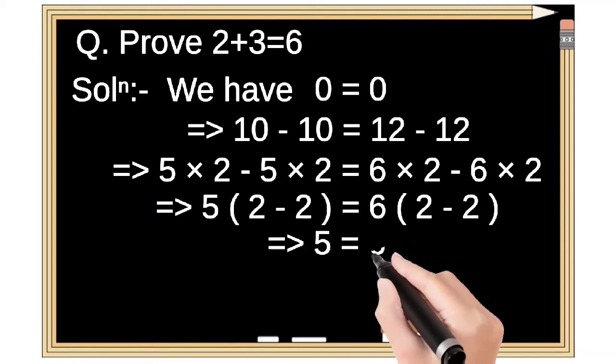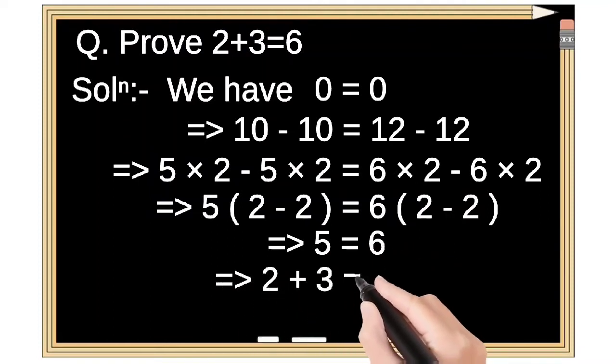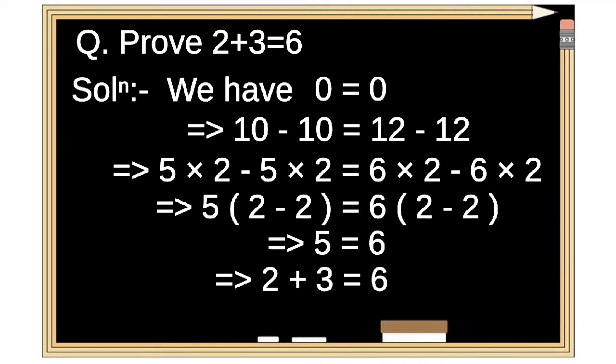2 minus 2 cancels out both sides, then we get 5 equals 6. 5 can be written as 2 plus 3 equals 6.